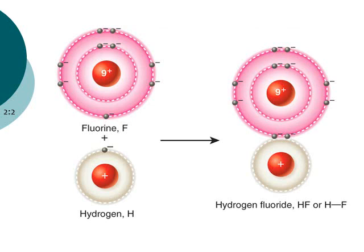Here's an example of a covalent bond. Fluorine has nine electrons — the first two go in the first shell and the remaining seven go into the second shell, so fluorine really wants one more electron. Fluorine can covalently bond with a hydrogen atom, which has one electron in its outer shell and wants two. They share electrons with each other, so after bonding, fluorine has eight electrons in its outer shell and hydrogen has two — both atoms are happy with this covalent bond.